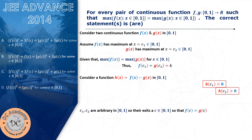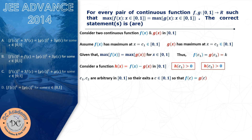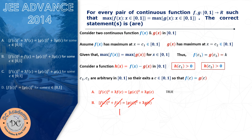Now let's test the options. Option A says f(c)² + 3f(c) = g(c)² + g(c). Since f(c) and g(c) are equal, the left-hand side and right-hand side will clearly be equal — so option A is a true statement. Option B says f(c)² + f(c) = g(c)² + 3g(c). If f(c) = g(c), then f(c)² and g(c)² cancel, and f(c) and g(c) cancel, leaving 1 = 3 — an impossible condition, so option B is false. Option C gives the same type of contradiction: 3 = 1, so it is also false.